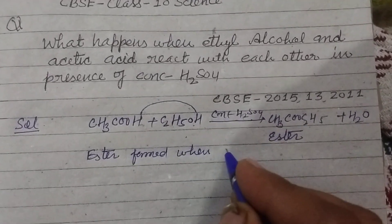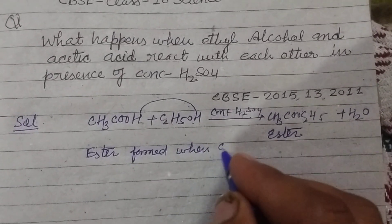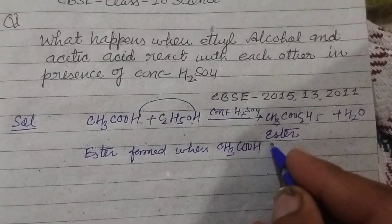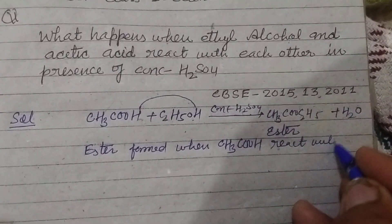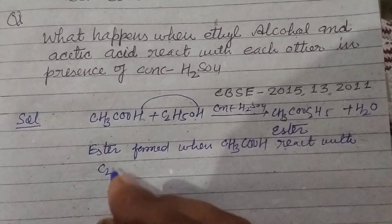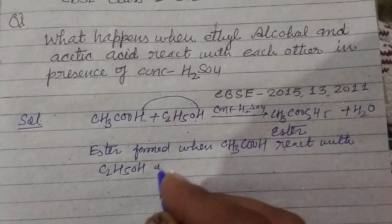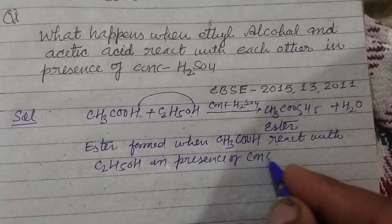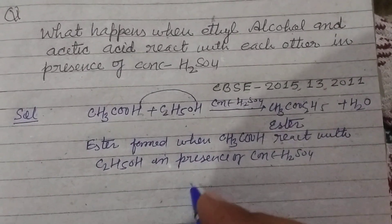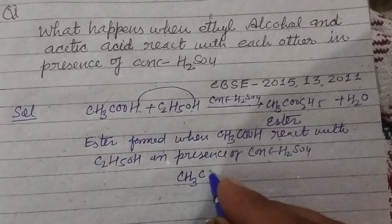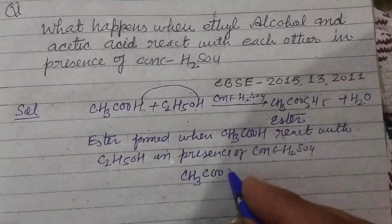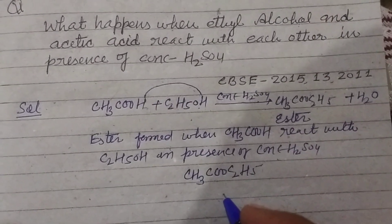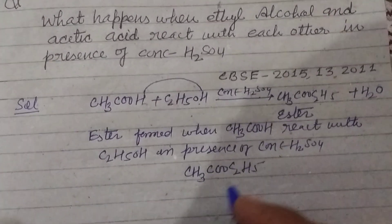Now, when acetic acid reacts with ethyl alcohol, C2H5OH, in the presence of concentrated H2SO4, the ester formed — CH3COOC2H5 — is also called ethyl acetate, because it has two carbon groups: ethyl from the acid and ethyl from the alcohol.